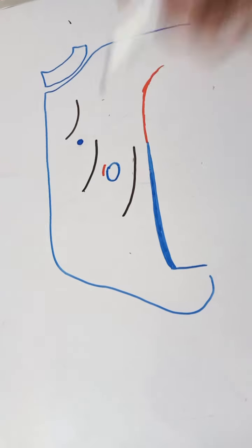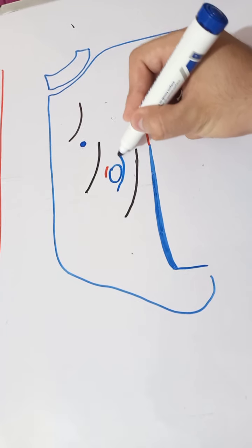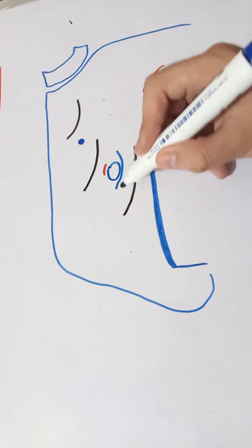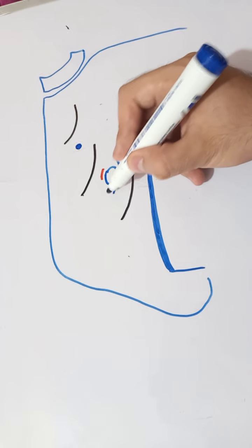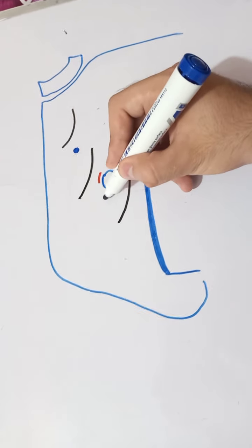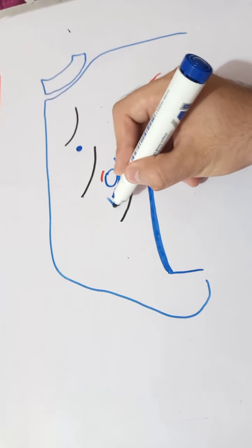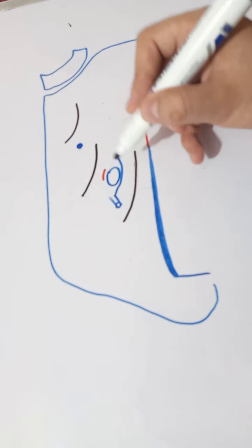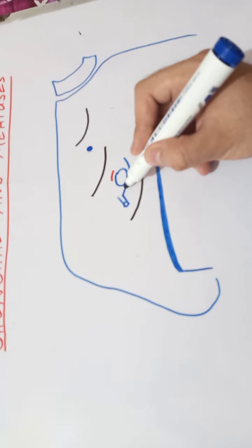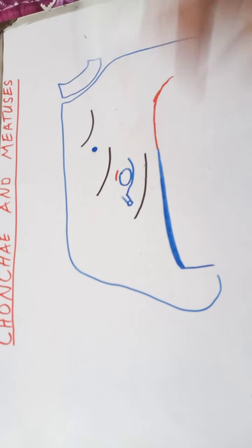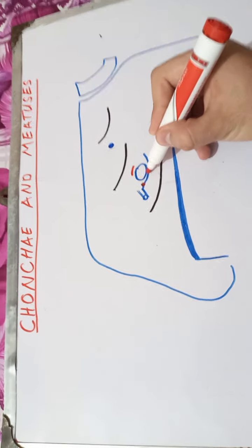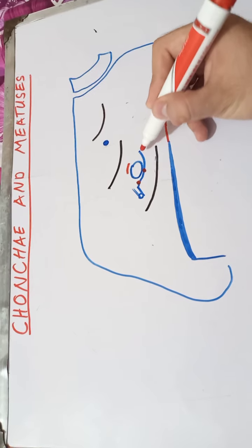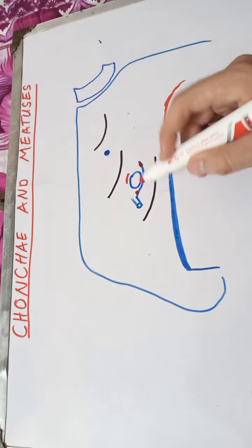At the inferior end of the ethmoidal bulla there is a deep, semicircular invaginated mucosal fold called the semilunar hiatus. At the anterior end of the semilunar hiatus there is an opening into the middle meatus called the infundibulum of the nose. At the anterior end of the semilunar hiatus there is first the opening for the frontal sinus, then the opening for the anterior ethmoidal sinus.